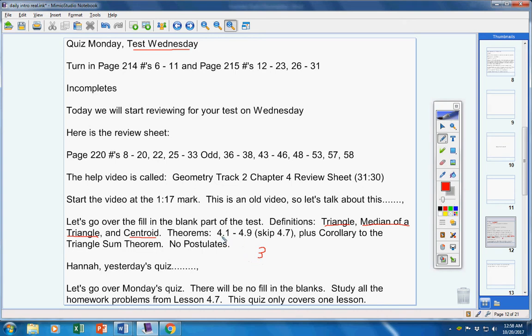Theorems. 4.1 through 4.9, but skip 4.7. That's a total of eight theorems. Oh, I'm sorry. Nine theorems because I also want you to know this theorem here. It's called the corollary to the triangle sum theorem. So all of this should be in your notes. Notice there are no postulates on the quiz for the fill in the blanks.